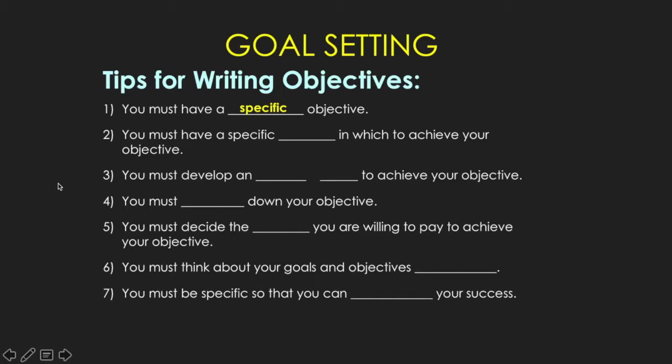First of all, goals have got to be specific. You've got to have a mindset that you're going to narrow that down to a very specific objective. You must also — and this is one of the areas most of you left off — have a specific time in which you're going to achieve your objective. If you don't set yourself a deadline, it's never going to get accomplished.